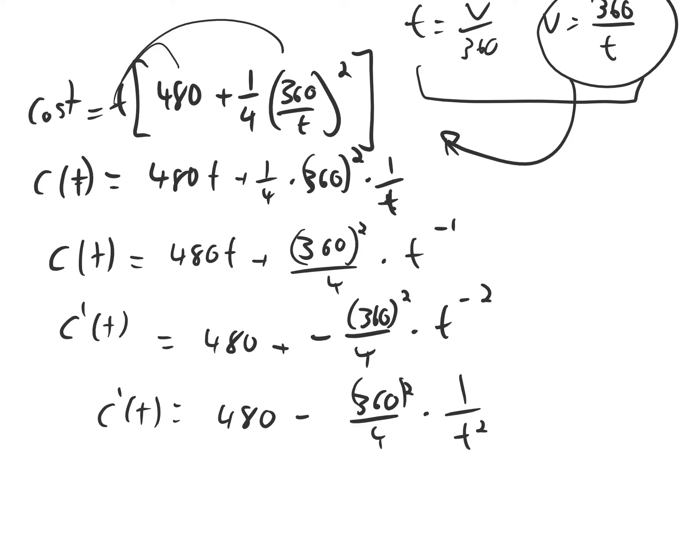When we want to maximize or minimize, we look for critical points. So there are two questions we ask about c prime to look for critical points. Where is c prime undefined? I see that there's a t in the denominator, so it's undefined at t equals 0. But at time equals 0, the train won't have gone anywhere. So even though this makes sense algebraically, we'll ignore it because it doesn't address the actual moving train question.